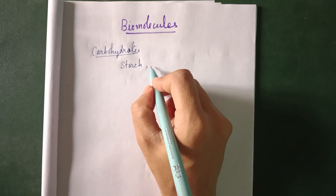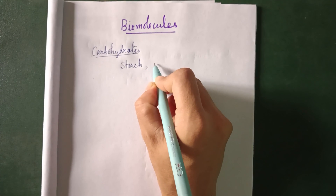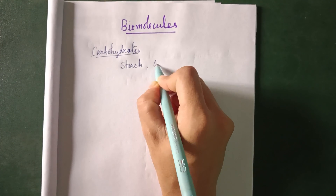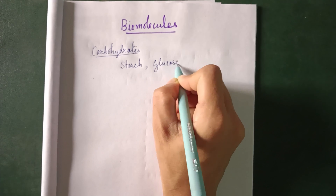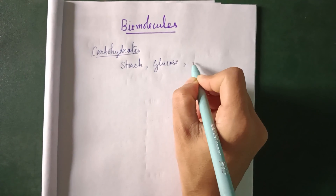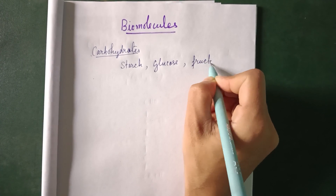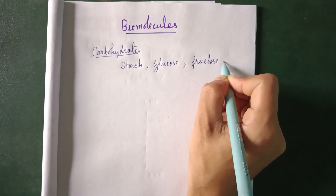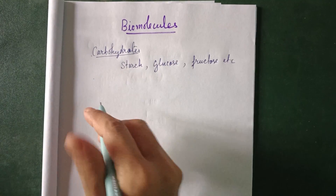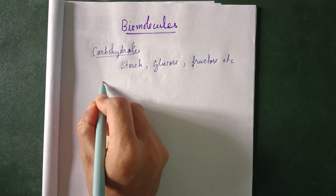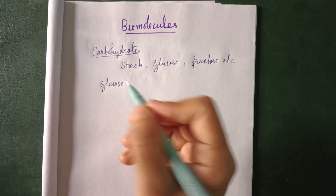Examples of carbohydrates include starch — starch is a carbohydrate which we take daily. Then glucose, our energy drink, is also a carbohydrate. Then fructose, and many more.